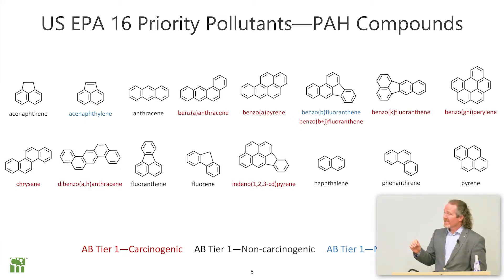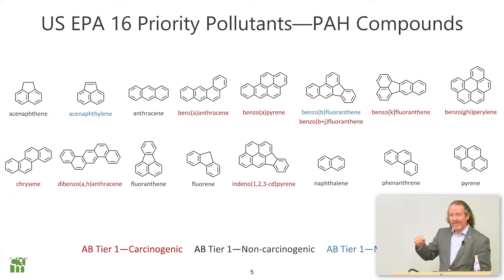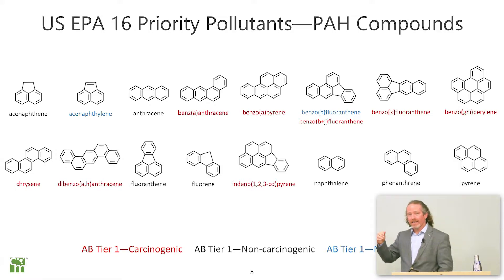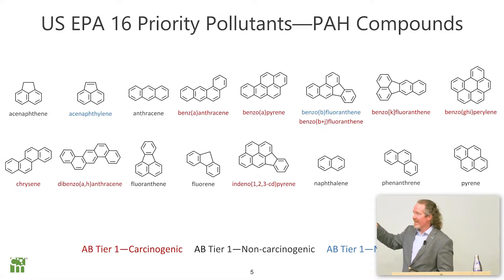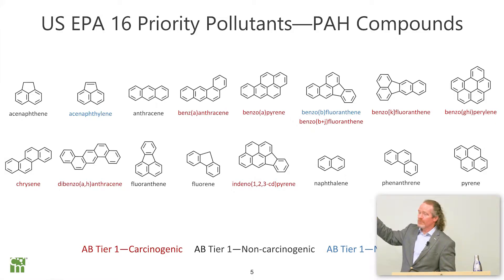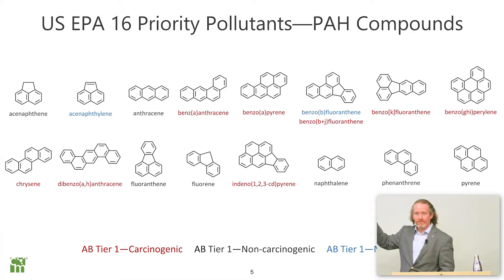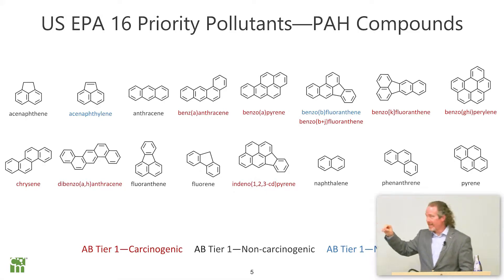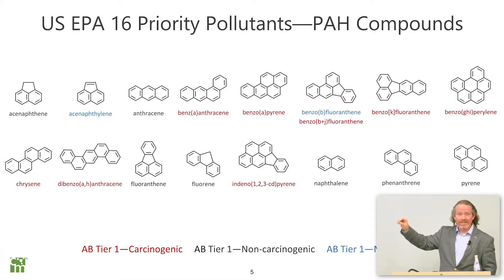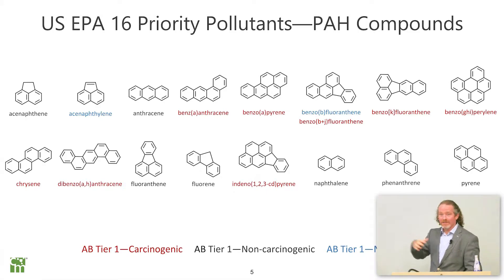Well, kinda. The people in 1976 decided to formalize this in 1978 — that's when these 16 PAH chemicals became the priority pollutants. Hasn't changed since 1978.